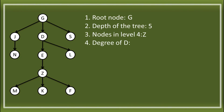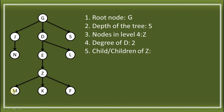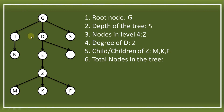The degree of D — counting its child nodes — is 1 and 2, so the degree is 2. Next, the children of Z: the nodes under Z are M, K, and F. Then, the total nodes in the tree — counting all nodes — we have 1, 2, 3, 4, 5, 6, 7, 8, 9, 10, and 11. That is the total number of nodes.